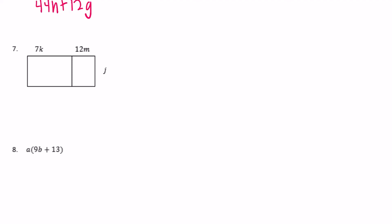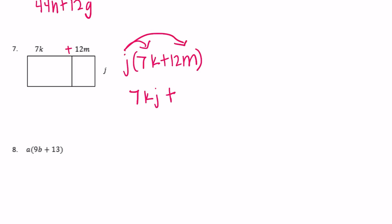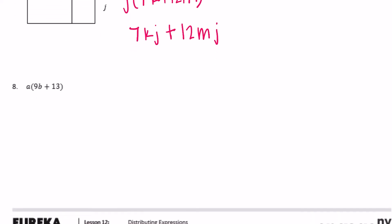For the area model with j times (7k plus 12m): multiply j by 7k to get 7kj, plus j times 12m to get 12mj. For a times (9b plus 13): a times 9b = 9ab, plus a times 13 = 13a. And that is the end of the lesson.